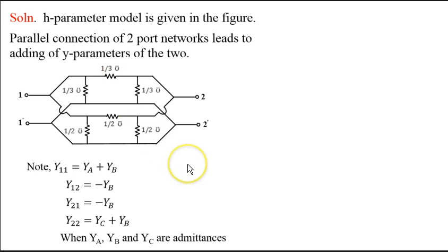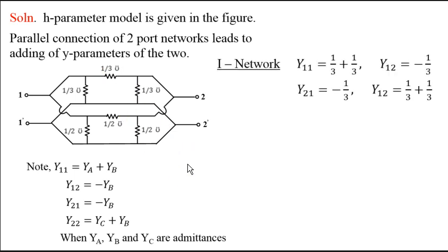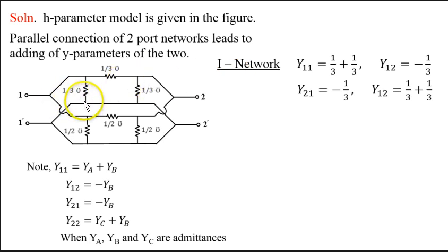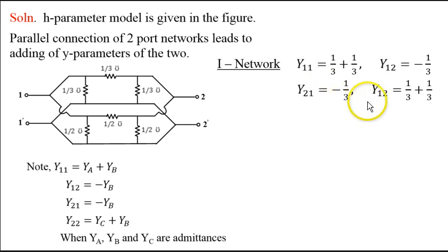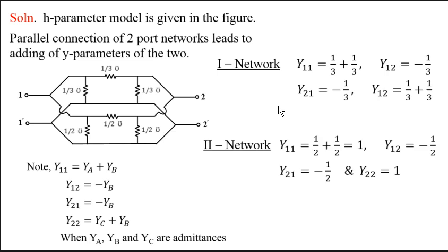This is the way you can find the admittance matrices for each of these networks — that means two Y networks. For the first network — with 1/3 Siemens values — we can find: Y11 is 1/3 plus 1/3, Y12 is minus 1/3, Y21 is minus 1/3, and Y22 is 1/3 plus 1/3.